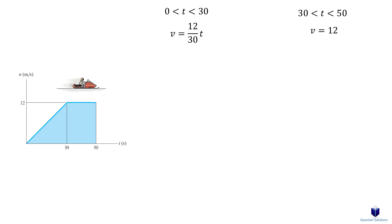If the question only asks for the distance traveled and the graph is a simple linear graph, you can calculate the area under the graph by adding up the rectangular and triangular spaces underneath. If it's not a linear graph, you have to take the integral of each segment — so for each position equation you have, take the integral.